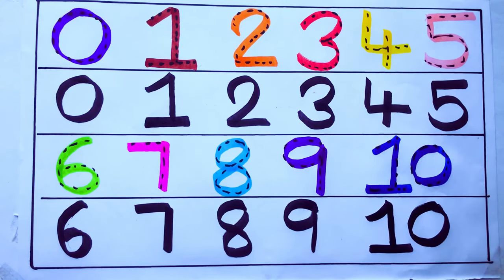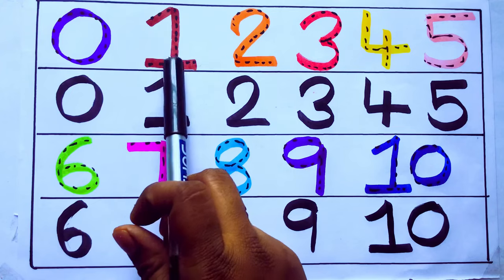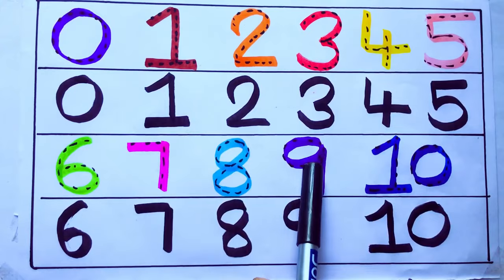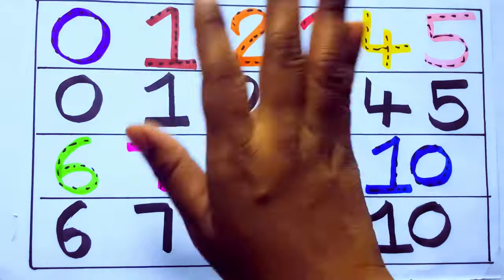Second learning numbers: 0, 1, 2, 3, 4, 5, 6, 7, 8, 9, 10. Bye kids.